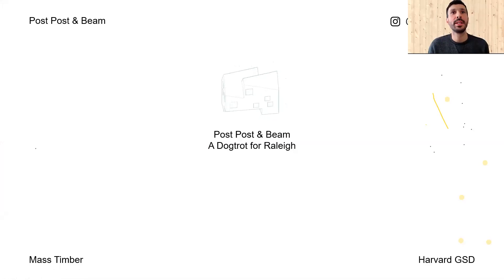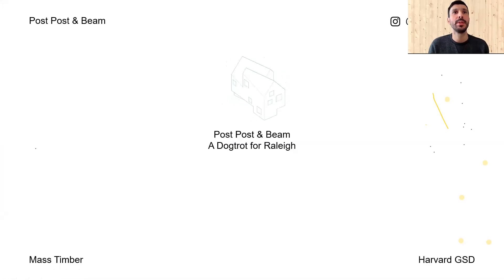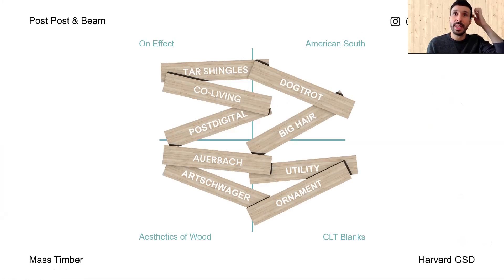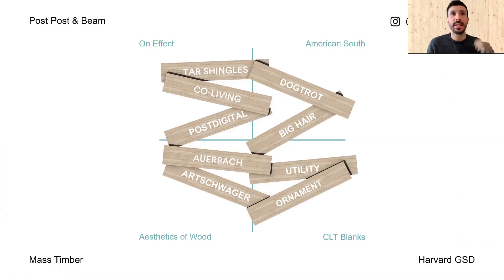My name is Daniel Garcia. I'm an architect from the US and my project for the Mass Timber Studio is called Post, Post and Beam, a dogtrot for Raleigh. This diagram helps to position my project relative to the studio brief, starting with CLT blanks, then the American South effect, and finally the aesthetics of wood.